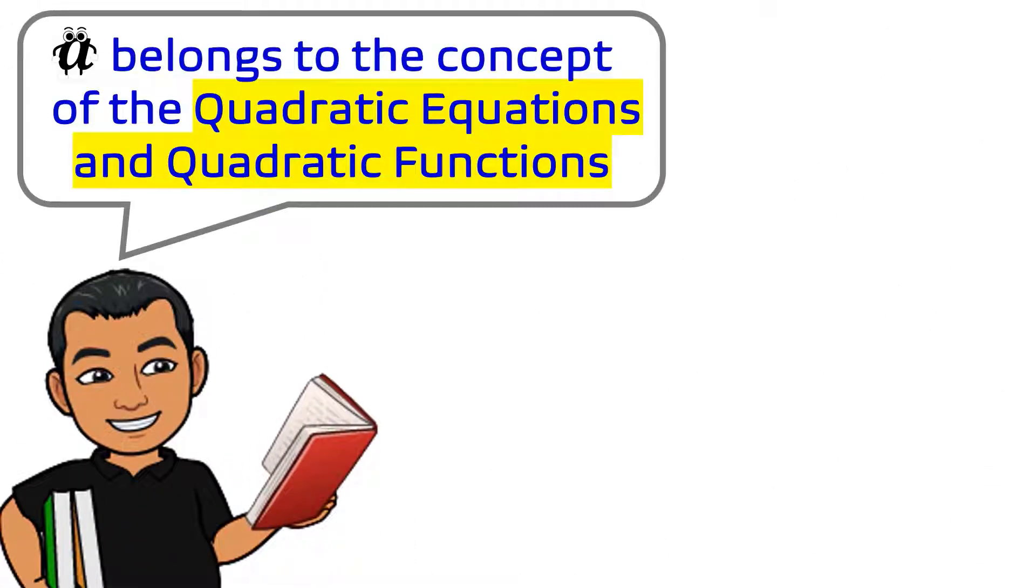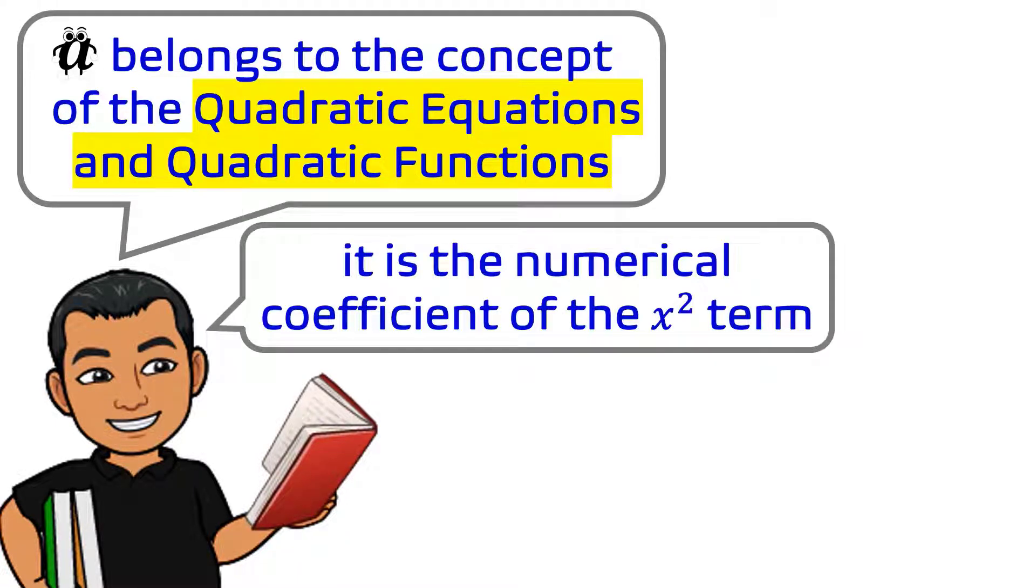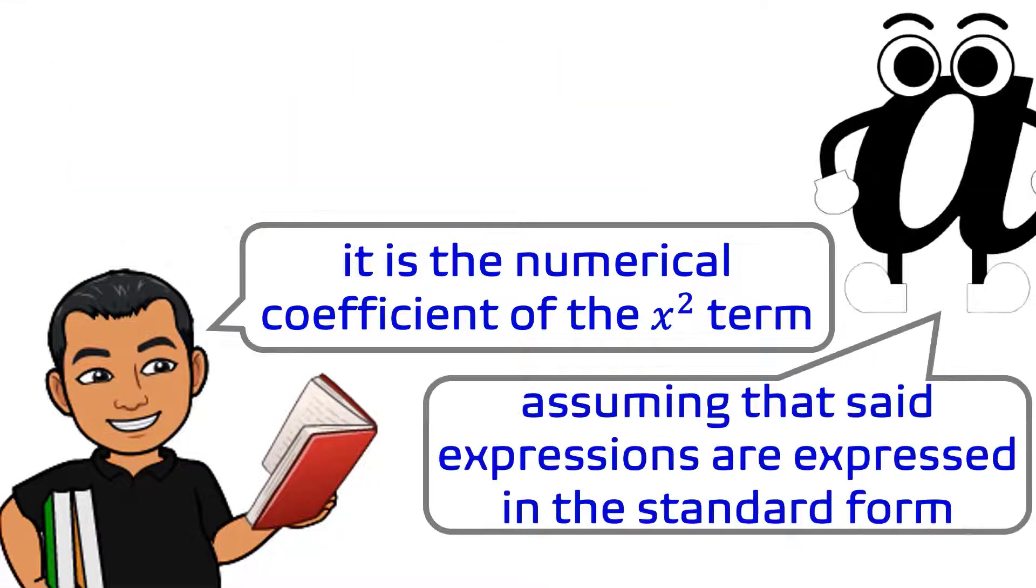A belongs to the concept of the quadratic equations and quadratic functions. It is the numerical coefficient of the x-squared term, assuming that said expressions are expressed in the standard form.